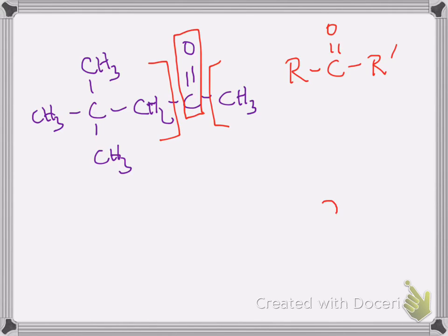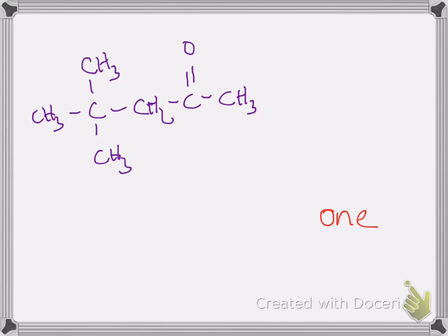To name a ketone, we're going to end in O-N-E. This is a ketone, so it's going to end in O-N-E. I need to find the longest continuous carbon chain that contains the ketone or the carbonyl group, at least that carbonyl carbon that I just underlined. And we want to give that carbon the lowest number possible.